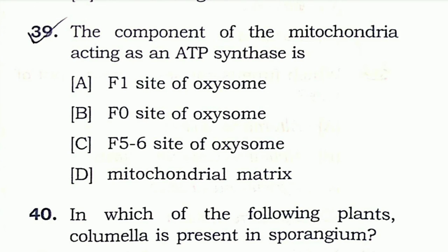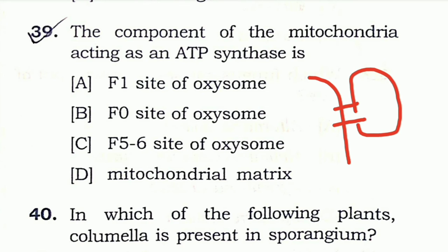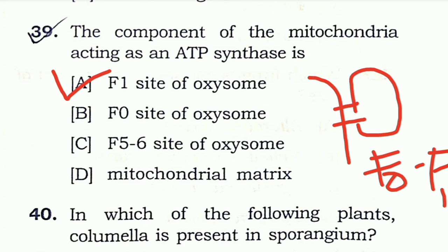Question 39: The component of the mitochondria acting as ATP synthase is — in the inner membrane of the mitochondria, there are structures called F0-F1 particles, also called the F1 site. So the right answer is F1 site.